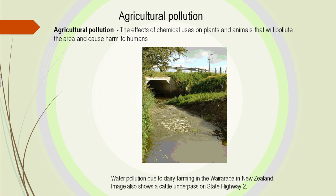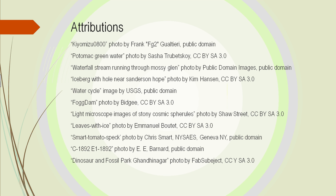Agriculture is one of the biggest polluters. All the chemicals that go on our plants can easily run off into the water. It's not just the chemicals we put on plants — animal byproducts can also be washed off into the streams.